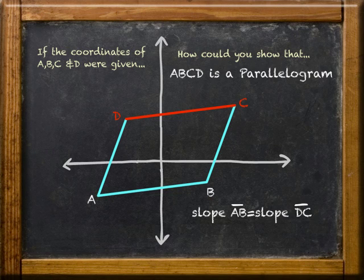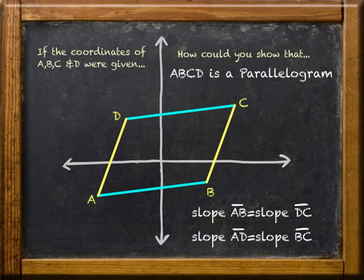Does this mean ABCD is a parallelogram? Well, not really. We've got to show that both pairs of opposite sides are parallel, not just one. That means we have to do the same thing with AD and BC. Meaning, we have to calculate their slopes and show that they're equal.